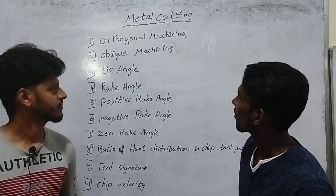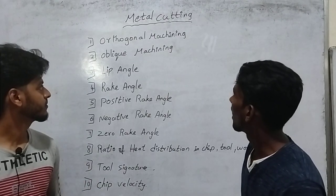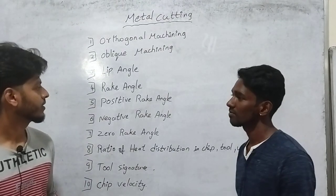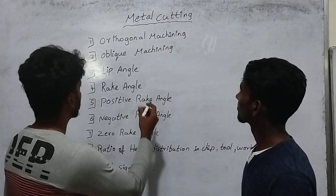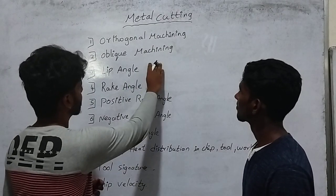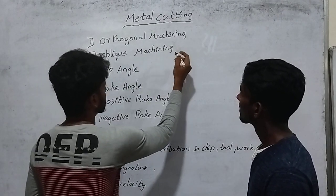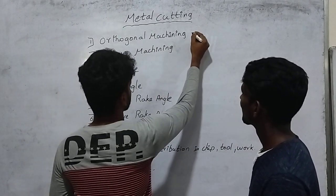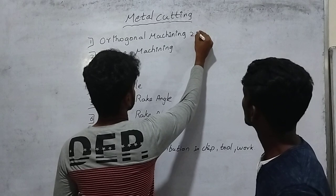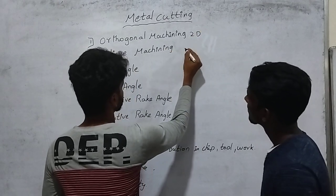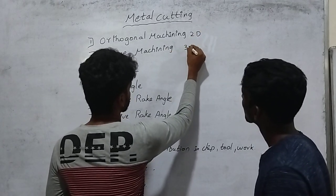The first concept is orthogonal machining. Let's talk about orthogonal machining and oblique machining. The orthogonal machining is used in two dimensions, and the oblique machining is used in three dimensions.